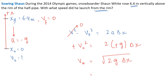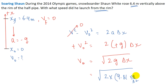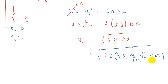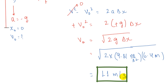Substituting values: v₀ = √(2 × 9.81 m/s² × 6.4 m). Solving with a calculator gives v₀ = 11 meters per second. This is the initial launch speed of the snowboarder from the rim.